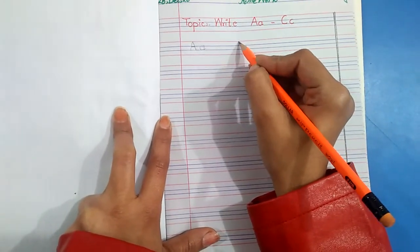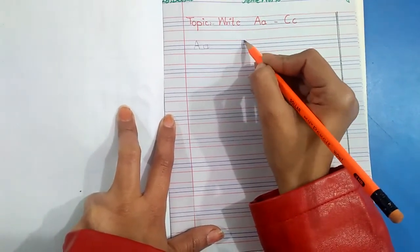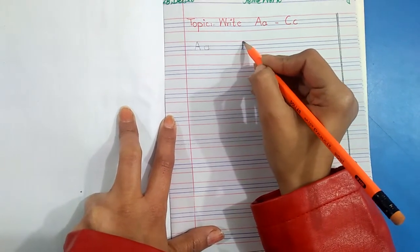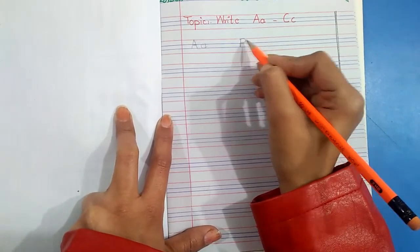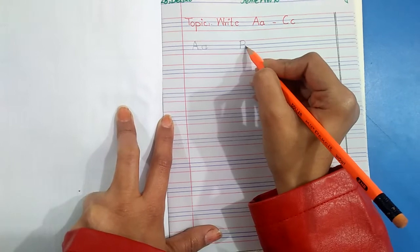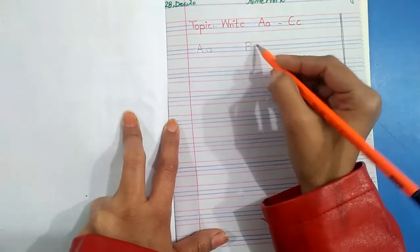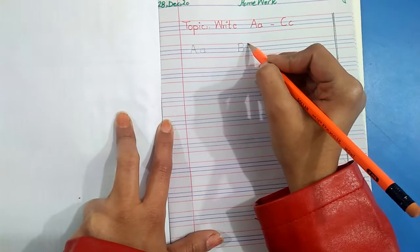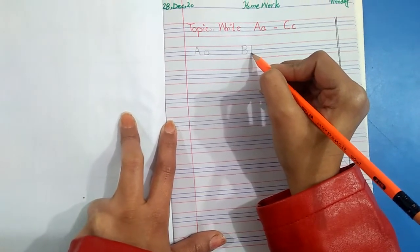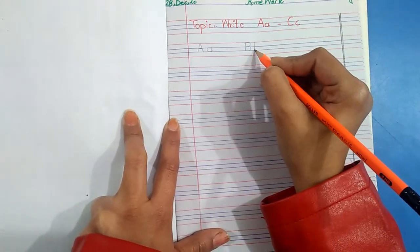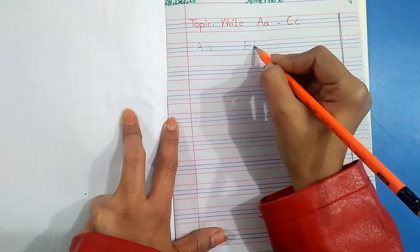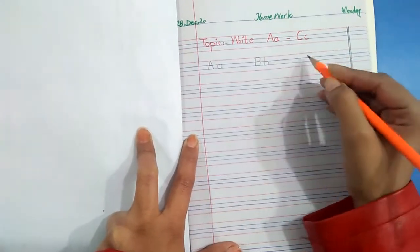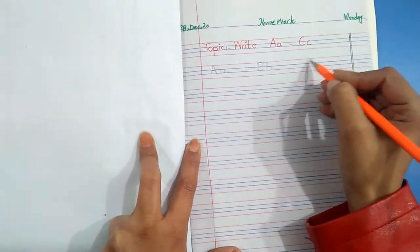Then we write letter B. First we draw a standing line, then a curve and another curve. This is capital letter B. Then we make small b: a standing line and a half curve. This is small letter b.